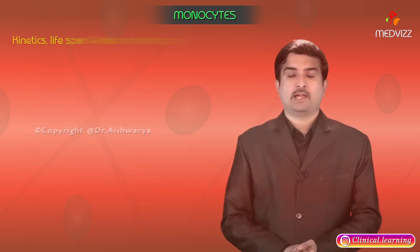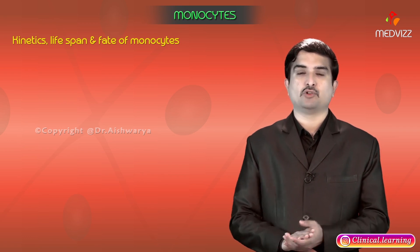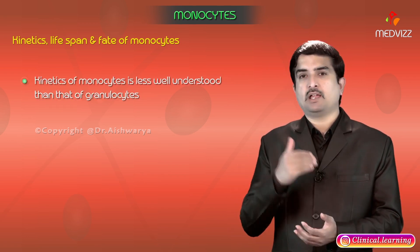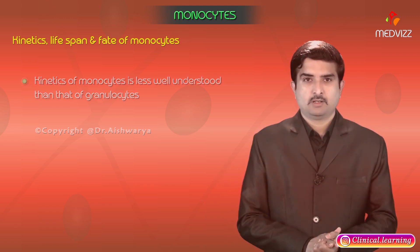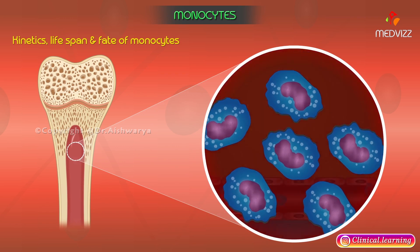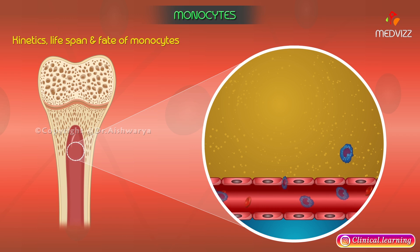Let us talk about the kinetics, lifespan, and fate of monocytes. The kinetics of monocytes is less well understood than that of granulocytes. After monocytes are released from the bone marrow, they remain in the circulation for 10 to 20 to over 40 hours, and then leave the bloodstream to enter the extravascular tissue.